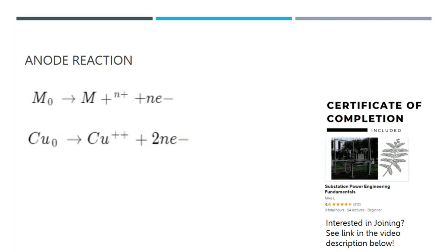At the anode, metal atoms lose one or more electrons and change into metal ions. The overall formula is: M⁰ → Mⁿ⁺ + nE⁻, where M⁰ stands for a metal atom such as iron or copper, M⁺ represents a metal ion released into the environment, and E⁻ is the negatively charged electron that stays within the metal structure. A specific anodic reaction such as the corrosion of copper would be: Cu⁰ → Cu²⁺ + 2E⁻.